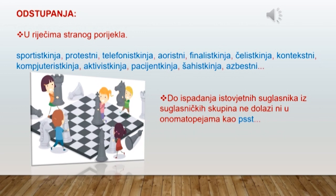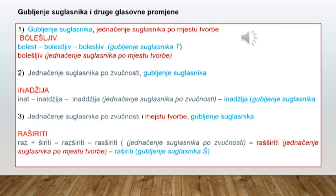Na prethodnim časovima smo naučili da u jednoj riječi može biti izvršeno više glasovnih promjena. Takav je slučaj i sa pridjevom bolešljiv, gdje imamo gubljenje suglasnika i jednačenje suglasnika po mjestu tvorbe. U imenici nađija imamo jednačenje suglasnika po zvučnosti, a onda je došlo do gubljenja suglasnika D. U glagolu raširiti imamo jednačenje suglasnika po zvučnosti, posle toga jednačenje suglasnika po mjestu tvorbe i na kraju gubljenje suglasnika Š.